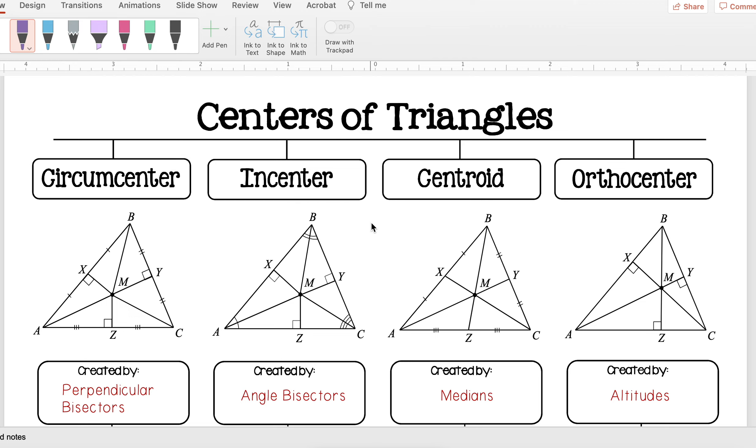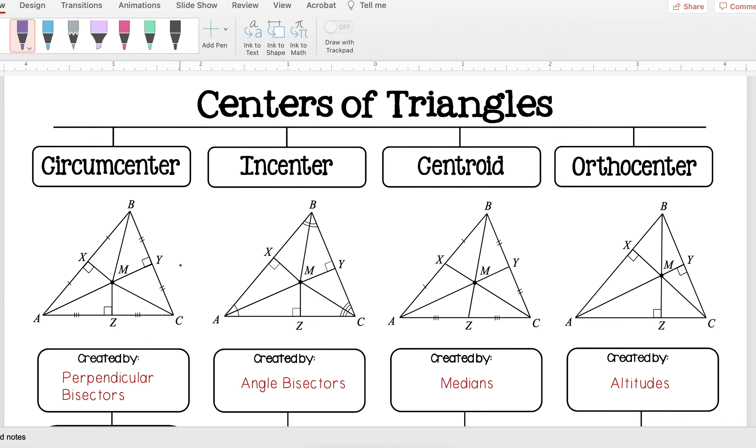This graphic organizer is really just a resource for you to summarize the centers of triangles that we have learned. Remember, we first talked about circumcenter, and that's what ends up looking like this. My point M here is my circumcenter, and that was created by perpendicular bisectors. That was where all my perpendicular bisectors from my sides intersect.